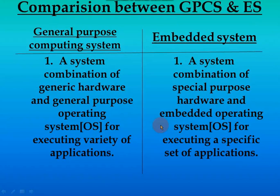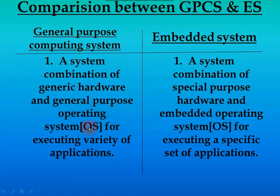Now let us come to the most important concept of this video: the comparison between General Purpose Computing Systems (GPCS) and embedded systems. General purpose computing systems are systems other than embedded systems — the name itself says they are used for all purposes with no speciality or particularity. In a GPCS, a combination of generic hardware and a general purpose operating system is used for executing a variety of application software.